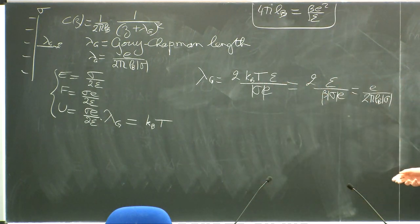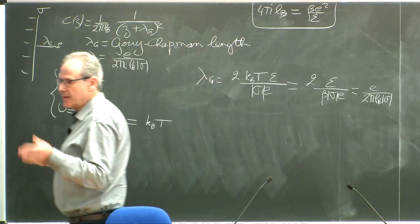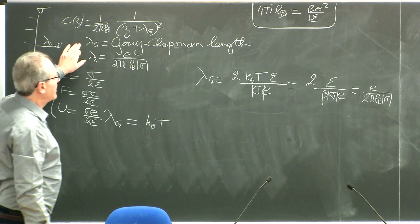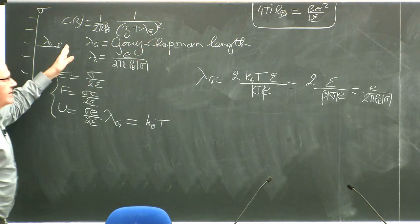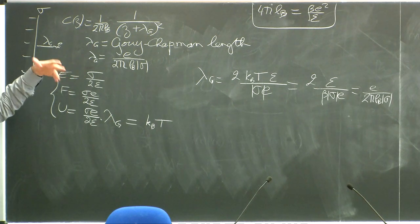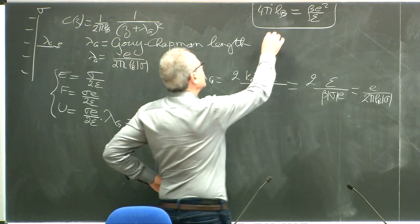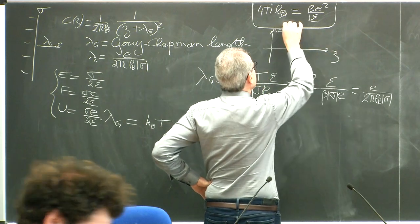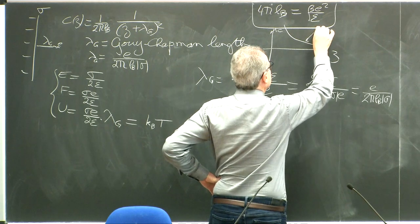If I express it in terms of L_B, it's exactly E over two pi L_B sigma, since L_B is defined by four pi L_B equals beta E squared over epsilon. So the scale that enters the decay of the counter-ion concentration is the scale at which the electrostatic energy of a particle equals essentially two k_B T. Beyond that it decays, and the ionic profile as a function of z goes like one over z squared at large distance.